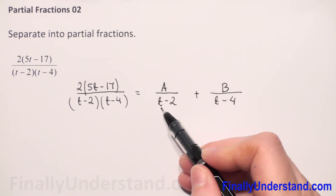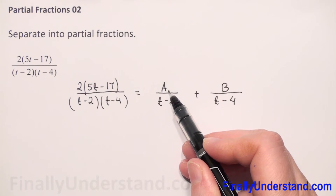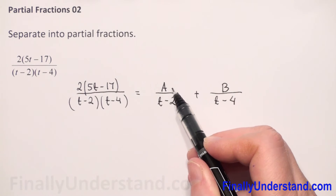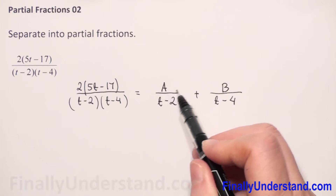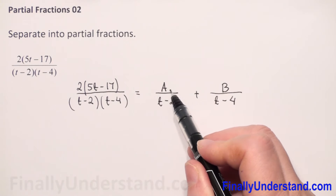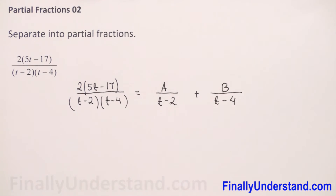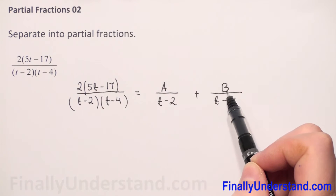We write those constants as A and B. Why constants? Because when the denominator has t to the first power, the numerator must be t to the zero power, which equals 1 — so there is no t in the numerators. Our unknowns are A and B.